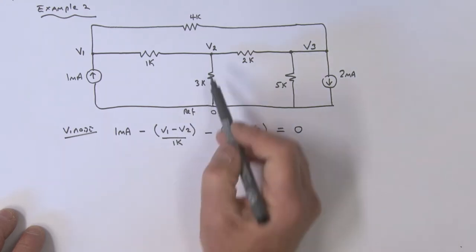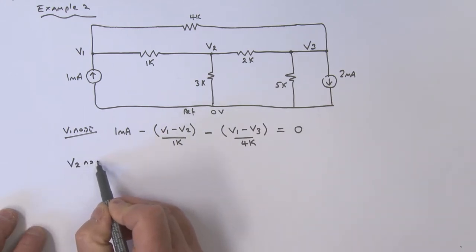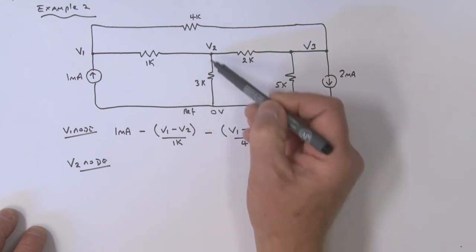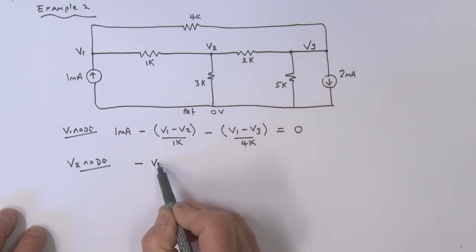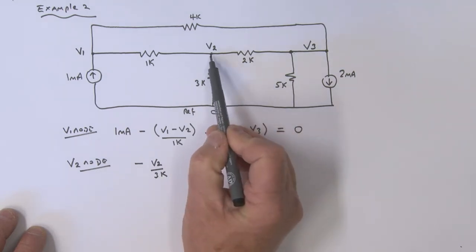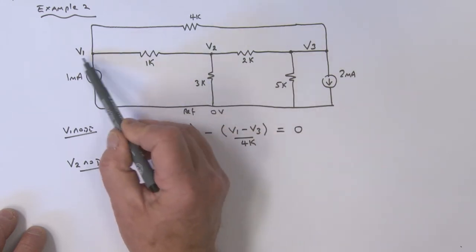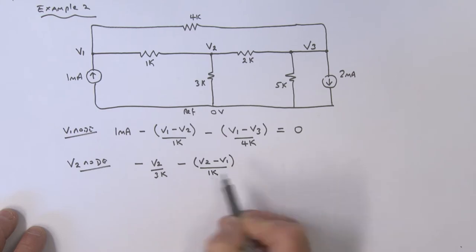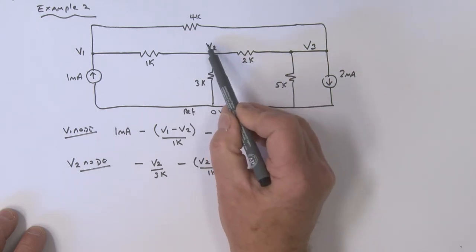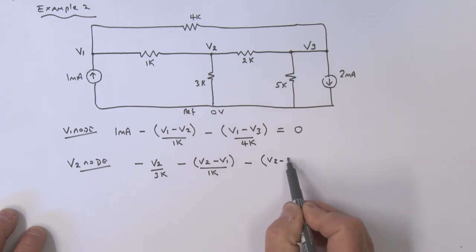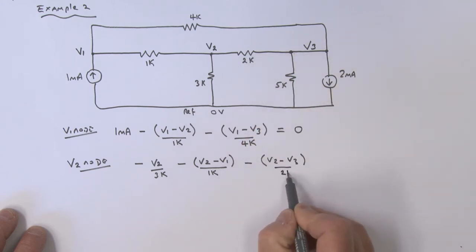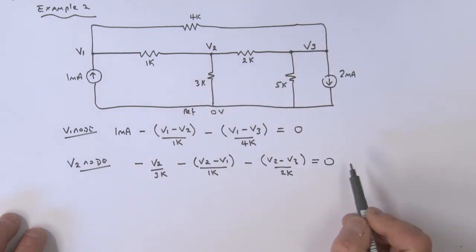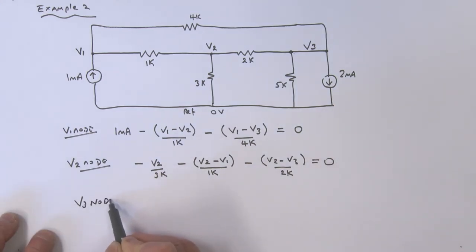Now let's look at the V2 node. We've got a current going in this direction: minus V2 over 3k. Current in this direction: minus (V2 minus V1) divided by 1k. And the current in this direction: minus (V2 minus V3) divided by 2k. All of that equals zero — that's our second node equation.